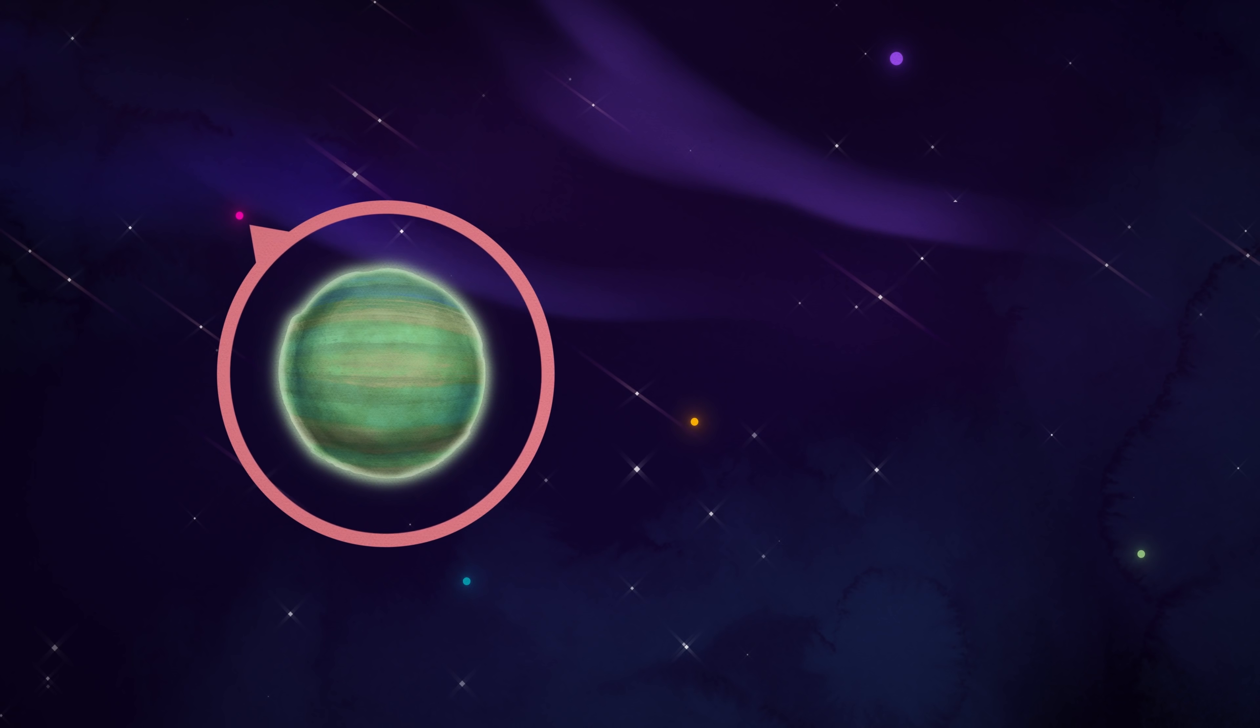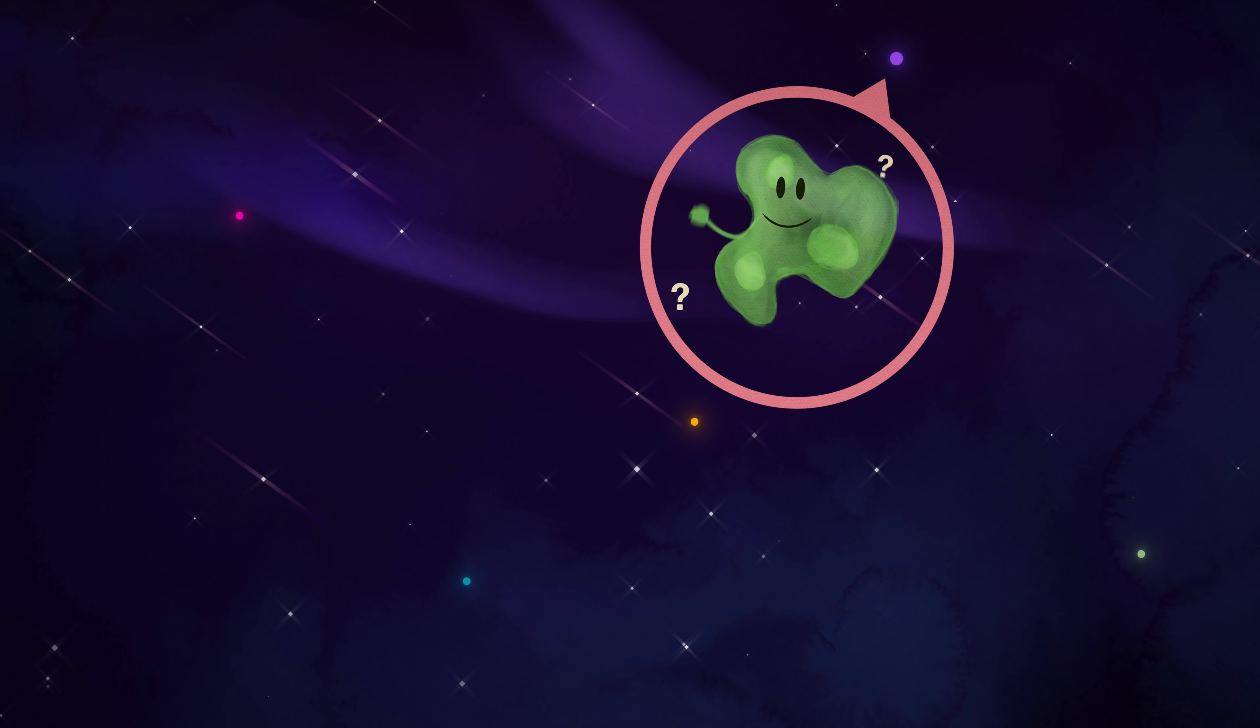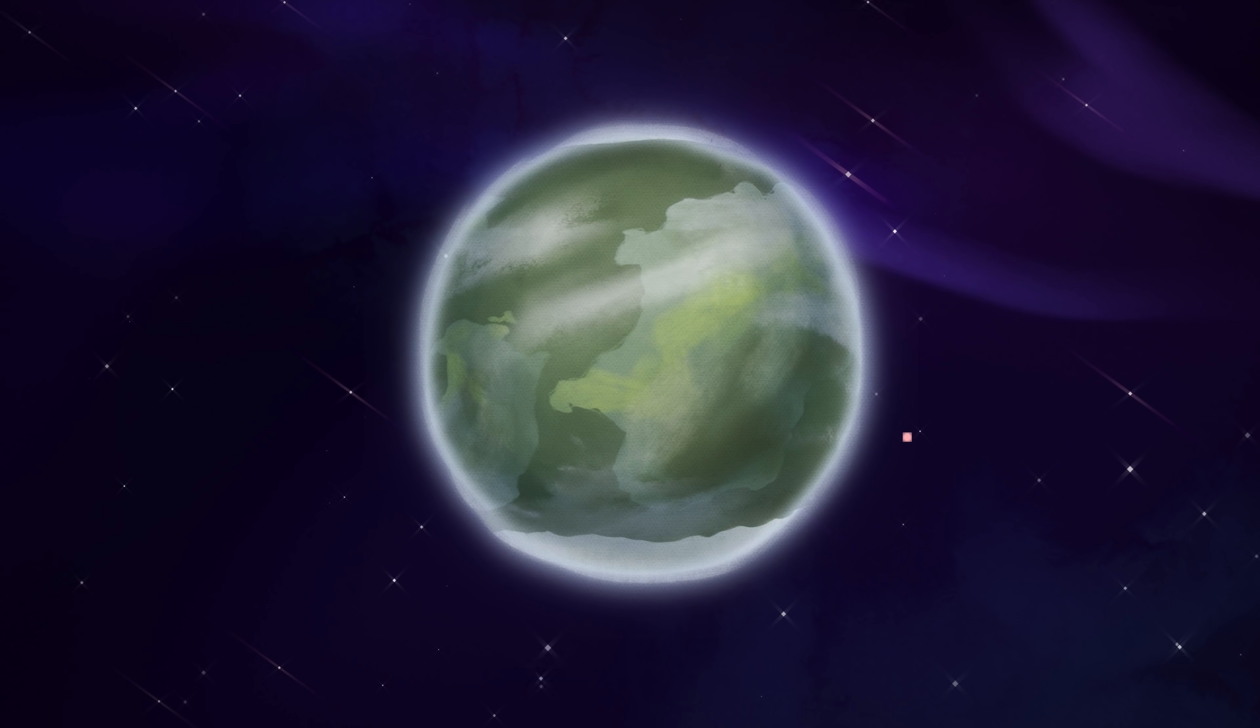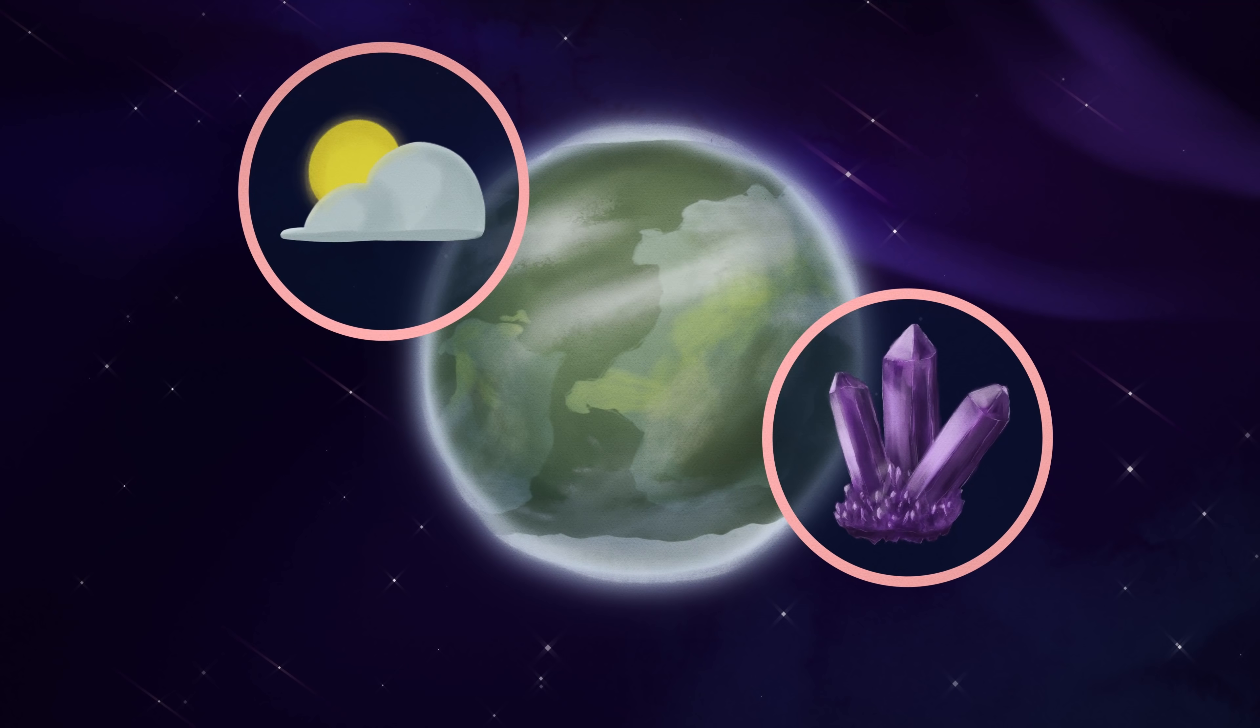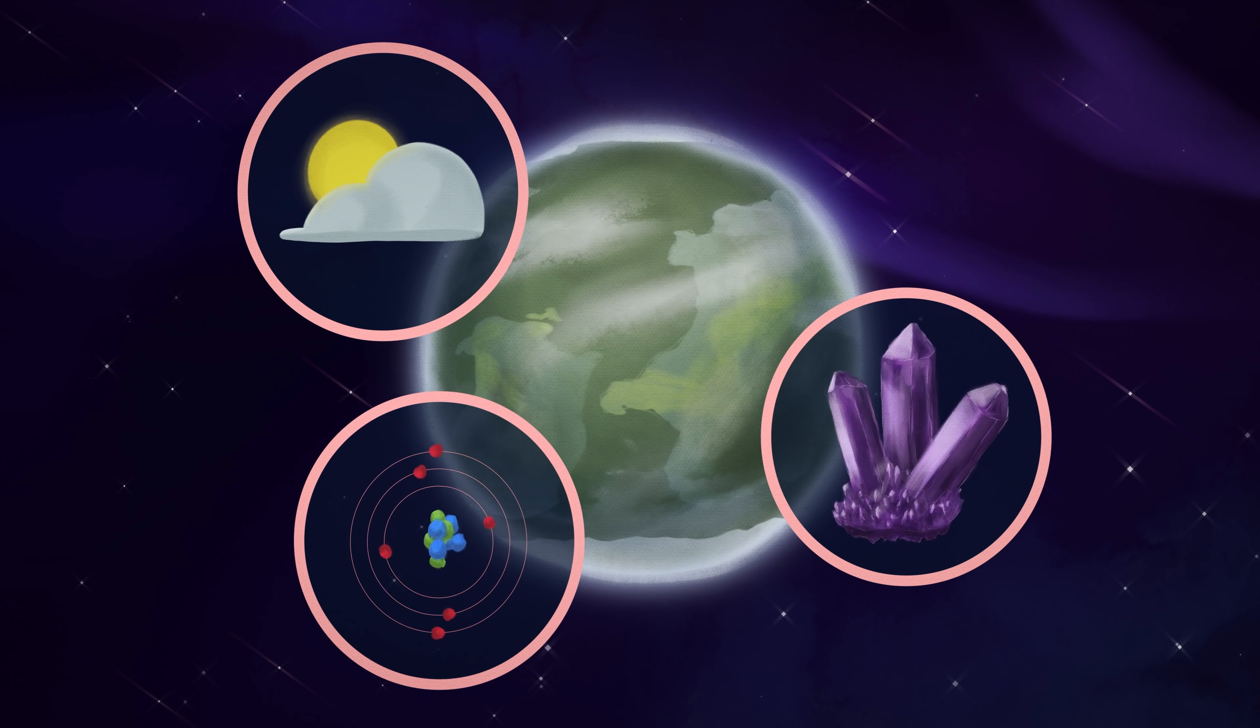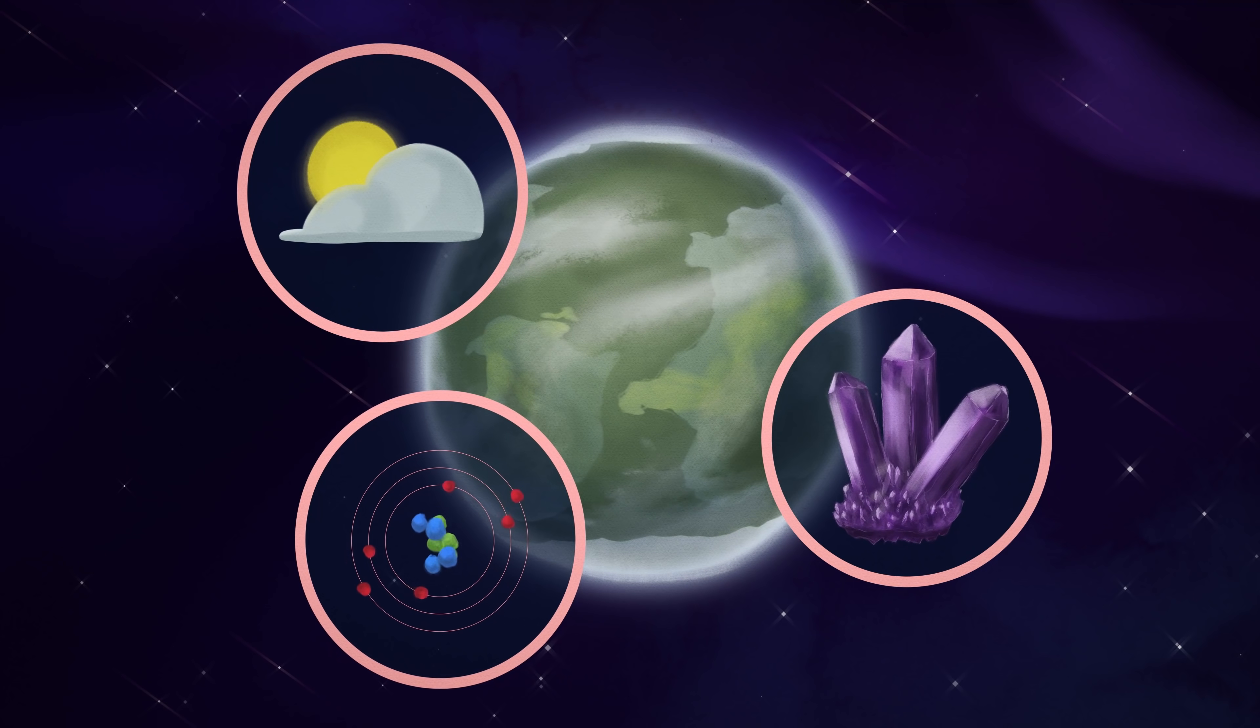So why do we study exoplanets? Well, our interest in finding worlds with life on them is a big factor. However, we want to know more about what makes a planet a place with all the right ingredients and conditions for life, what scientists refer to as habitability. How does it happen? How common is it?